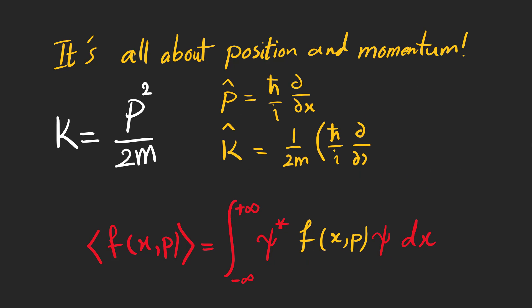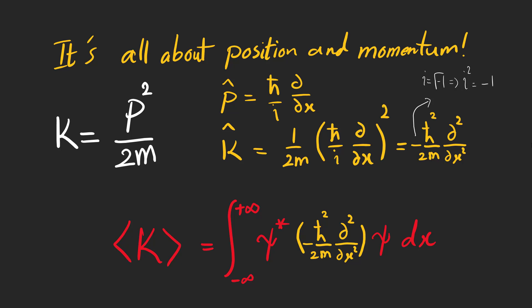For example, to find expectation value for kinetic energy in quantum mechanics, all we need to do is to put p operator, which is shown by p hat, into the kinetic energy formula. And then put the result between psi star and psi and take its integral from minus infinity to infinity with respect to dx. Now we have the expectation value for kinetic energy.